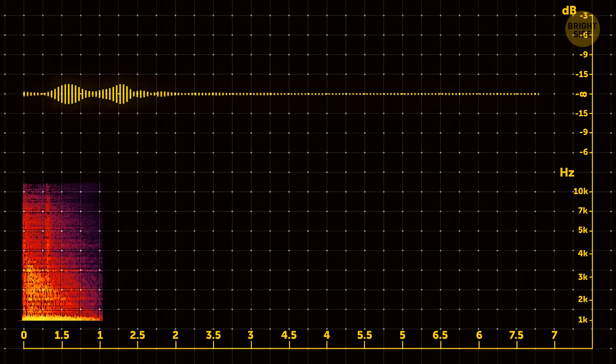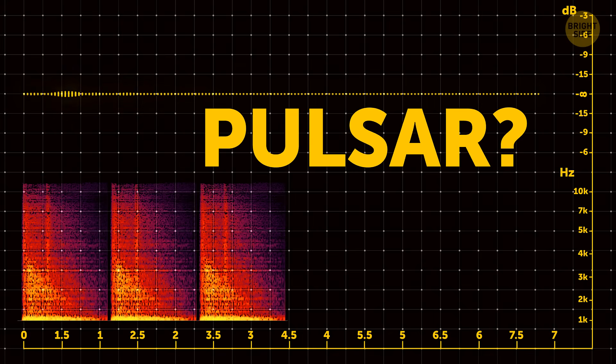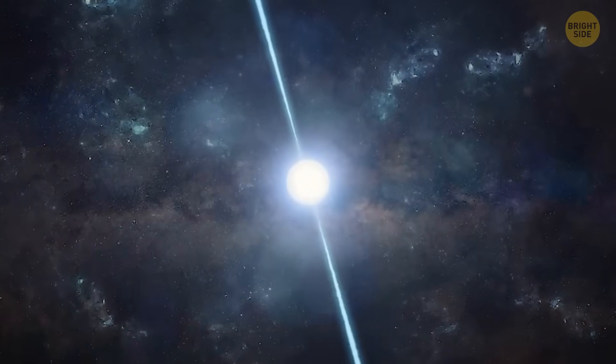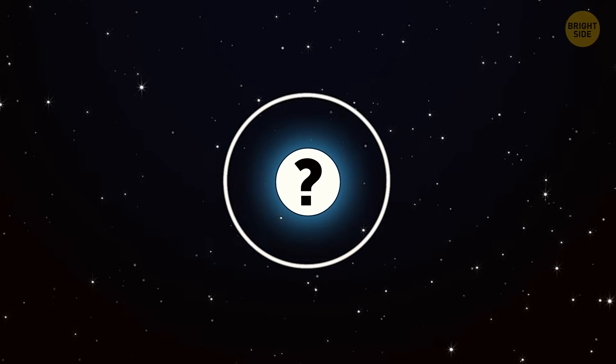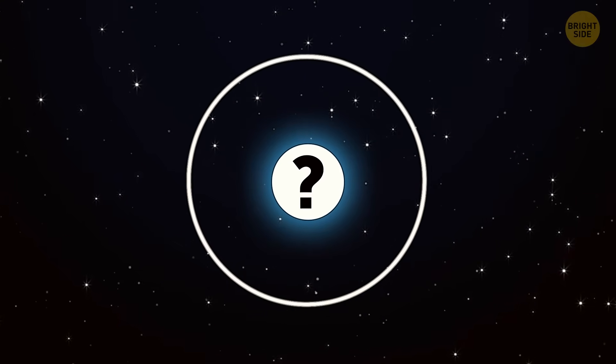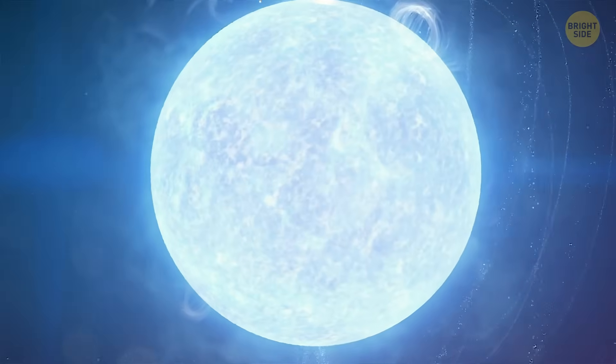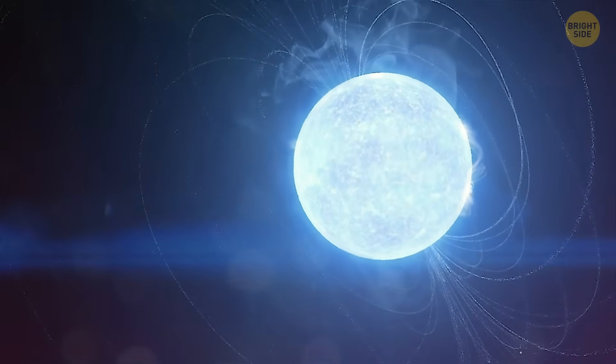Now, the strange signal we detected seems to have similarities with pulsars. But not quite. Pulsars usually have a predictable lifespan and slow down over time, eventually stopping their radio signals. In contrast, our mysterious signal is quite persistent and is blinking beyond what's expected for pulsars. So, maybe it's not a typical pulsar. Or not a pulsar at all.